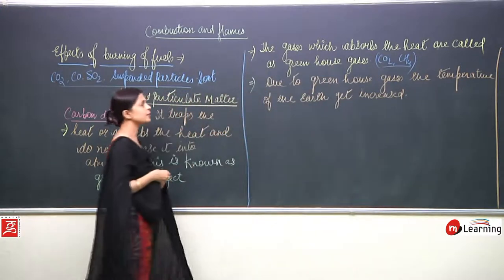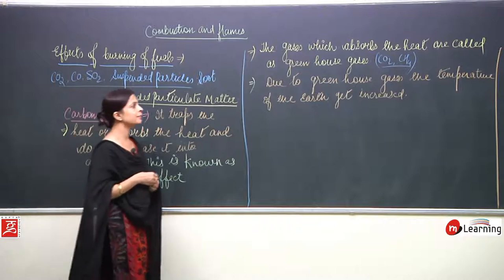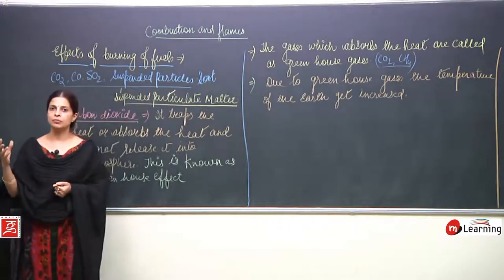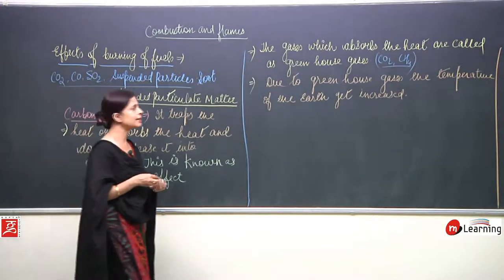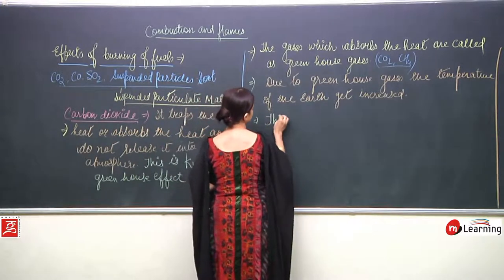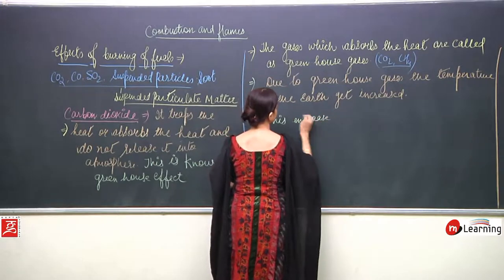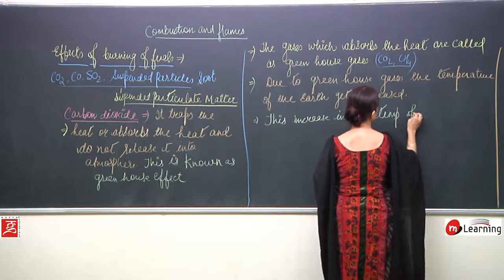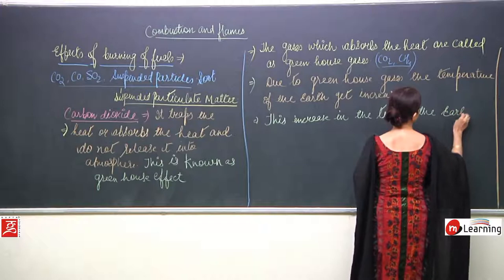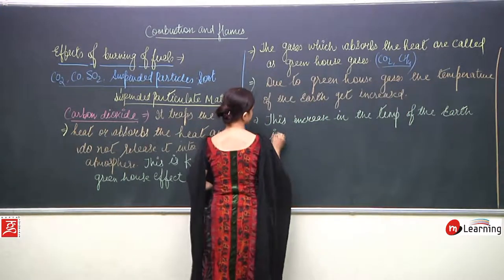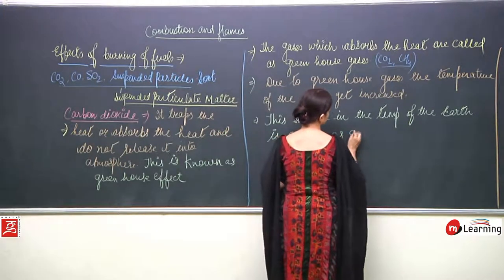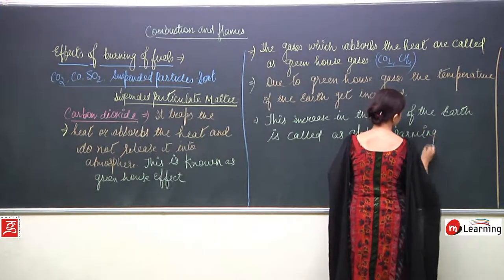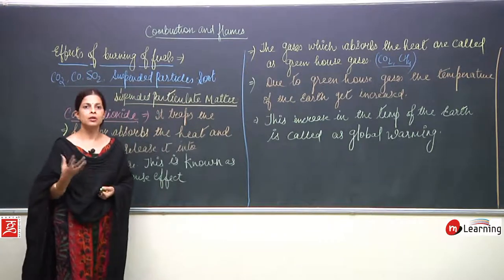When the temperature of the earth increases, this increase in temperature is known as global warming. When the greenhouse gases absorb the heat and do not release it into the atmosphere, the temperature of the earth gets increased, which is known as global warming.